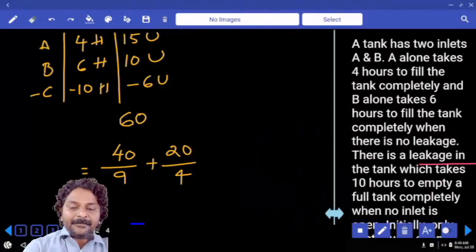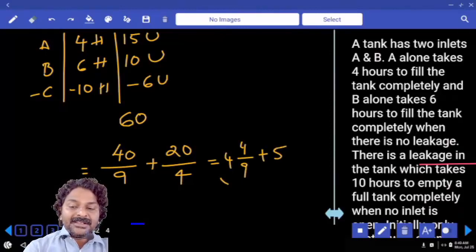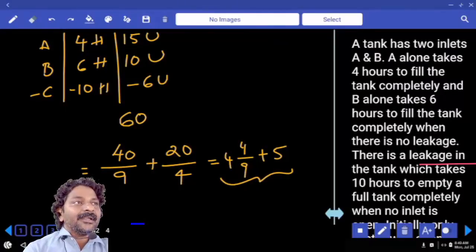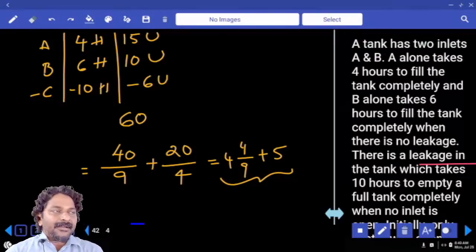Right. So 40 divided by 9 equals 4 and 4/9. 20 divided by 4 equals 5. Sum of these two values: 4 and 4/9 plus 5 equals 9 and 4/9. So the tank is filled in 9 and 4/9 hours.